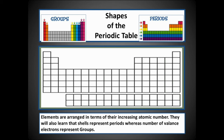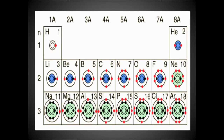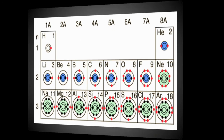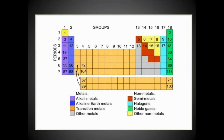Group 1A has one electron in the valence shell; Group 8A has eight electrons in the valence shell. The first shell is complete with hydrogen and helium, as the maximum capacity is 2. The second shell (L shell) has a maximum capacity of 8, starting from lithium and ending at neon. The third period runs from sodium to argon, with Group 1A having 1 valence electron up to Group 7A halogens having 7, and Group 8A having 8 valence electrons.